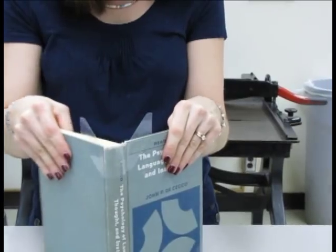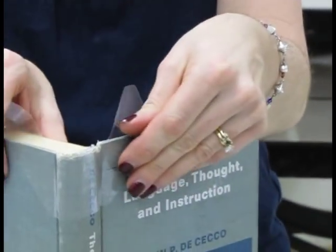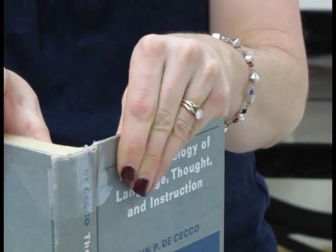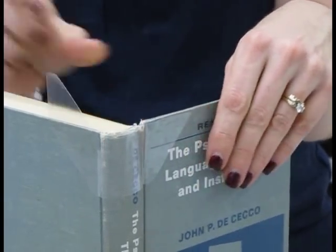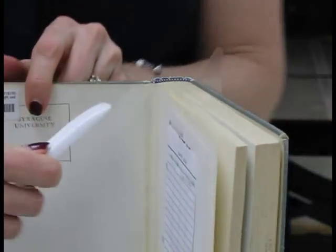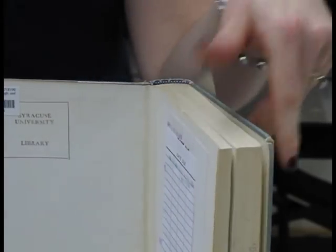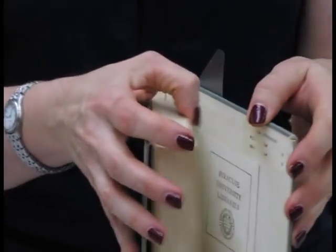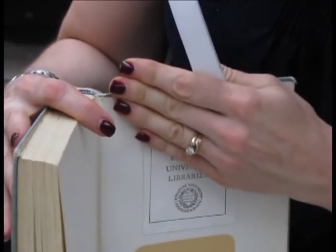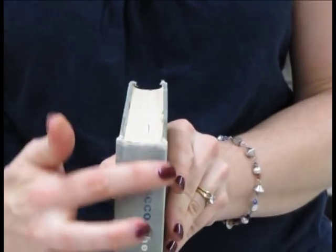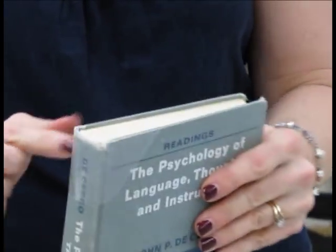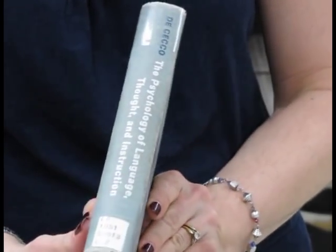And fold the wing tips over the cover and adhere them inside. And there you have a reinforced top hinge. And do the same thing at the bottom.